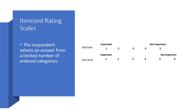This type of scale is called itemized rating scales. Basically, respondents can select an answer from a limited number of ordered categories. The example on the slide shows a scale with five categories, with 'important' as an anchor on one end and 'non-important' as the anchor on the other end. Respondents can choose numbers based upon their perception of the particular question, whether it's important or not important.